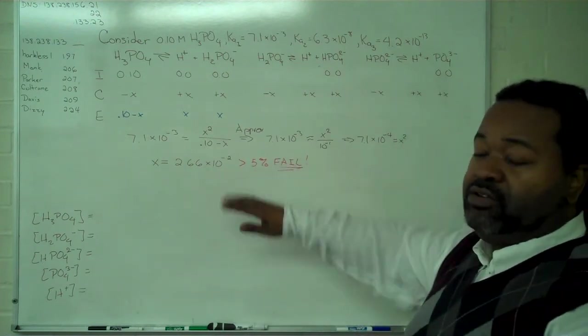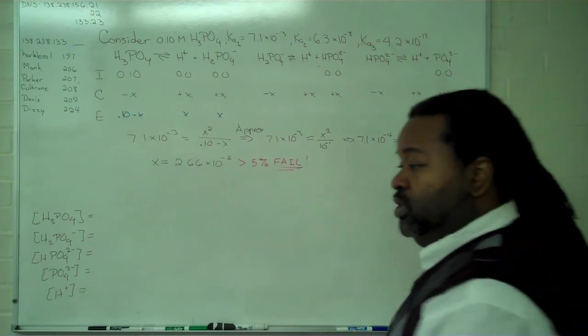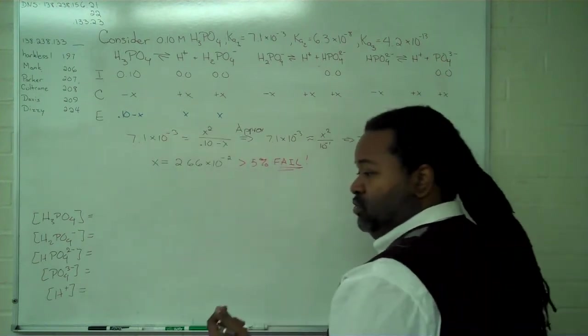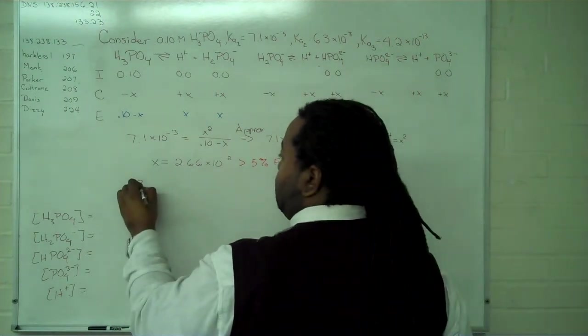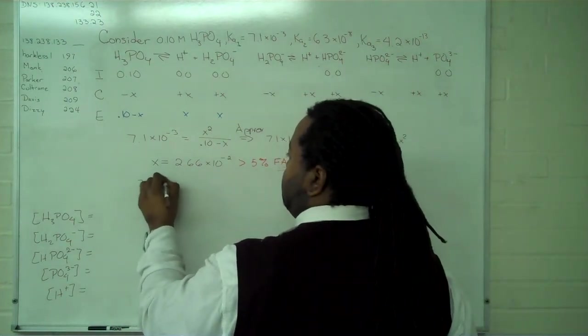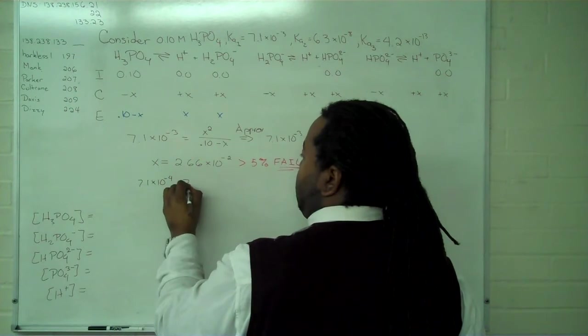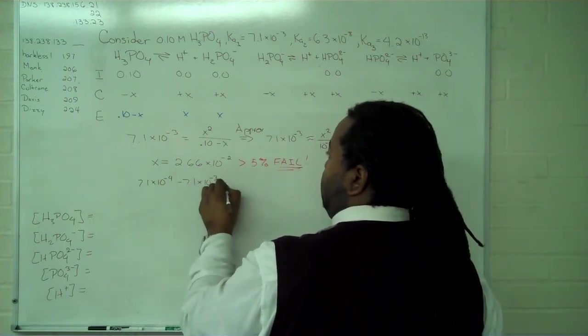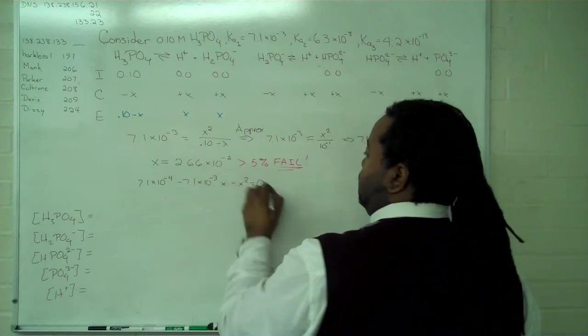And we cannot use that value. So we can expand this expression out to give us the full quadratic. And we get 7.1 times 10 to the minus 4 minus 7.1 times 10 to the minus 3x minus x squared equals 0.